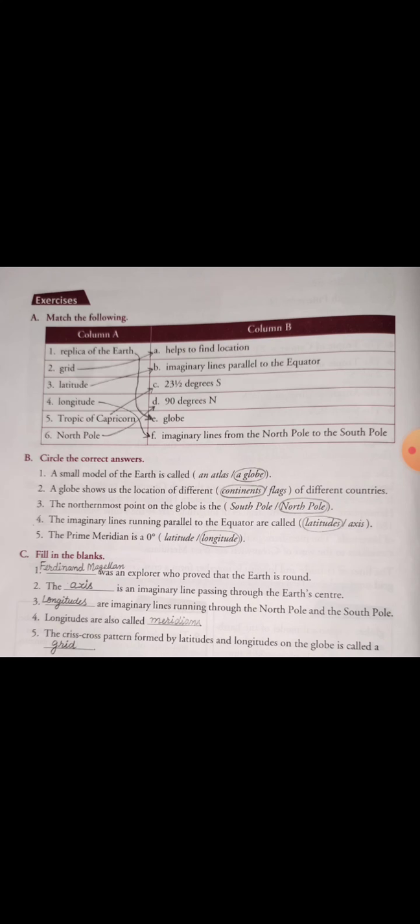The prime meridian is at zero degrees longitude — not latitude. The prime meridian is a longitude, so the answer is longitude.